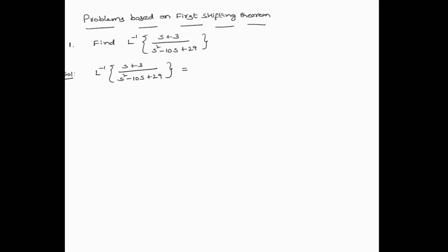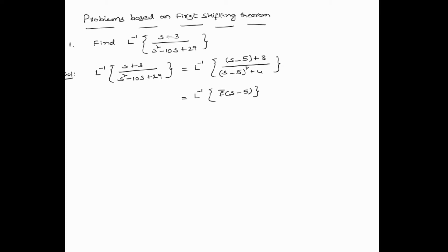First, we simplify the denominator and write it as (S - 5)² + 4. Then we simplify the numerator and write it as (S - 5) + 8. This is of the form F̄(S - 5), since the function involves the term (S - 5).